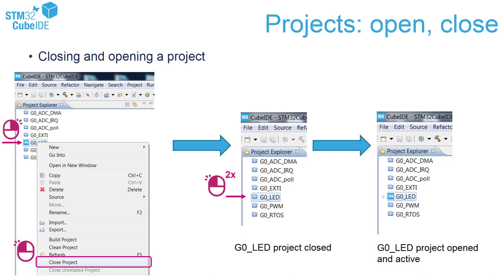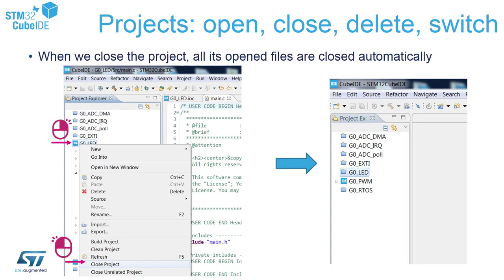On the left part of the screen you can see an example workspace containing seven projects. One of them, GZERO LED, is open. To close this project it is enough to click on its name, then right-click and select close project. All projects will then appear closed. To open a project, just double-click on its name and it becomes open and active. Once you close a project, all opened files related to that project are closed automatically.